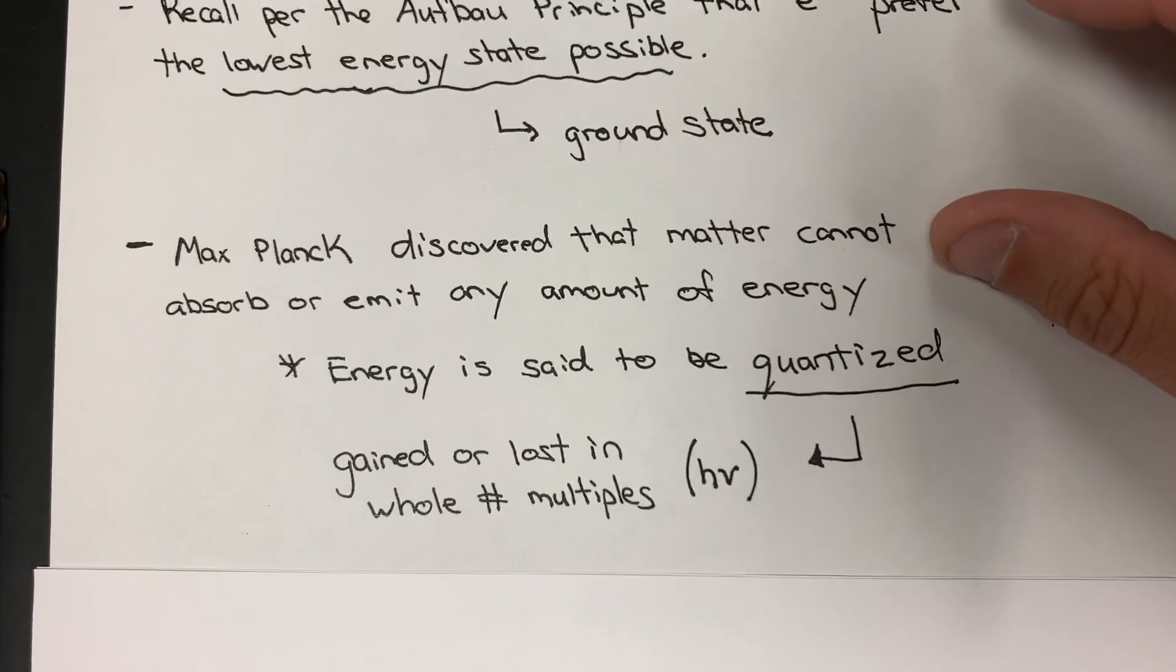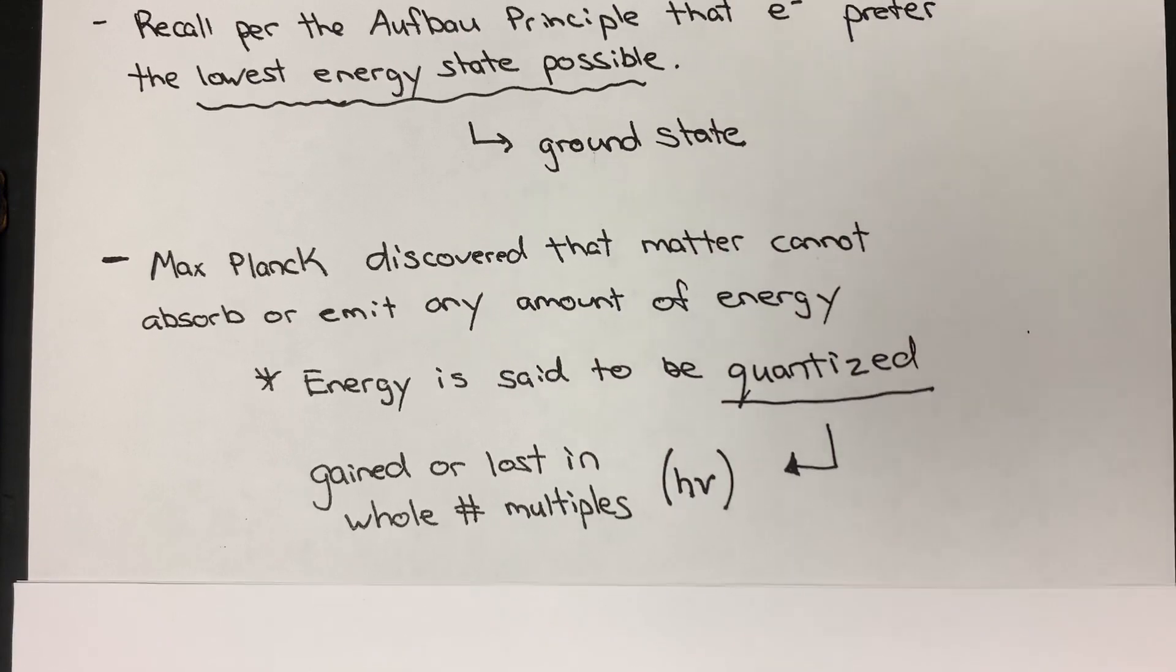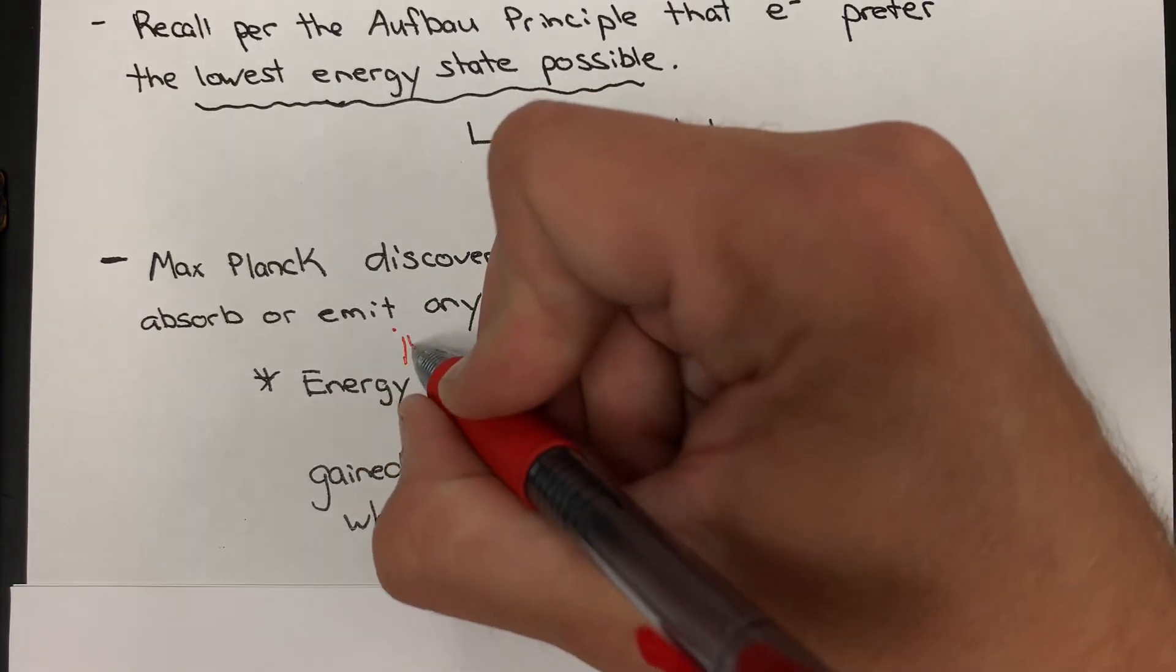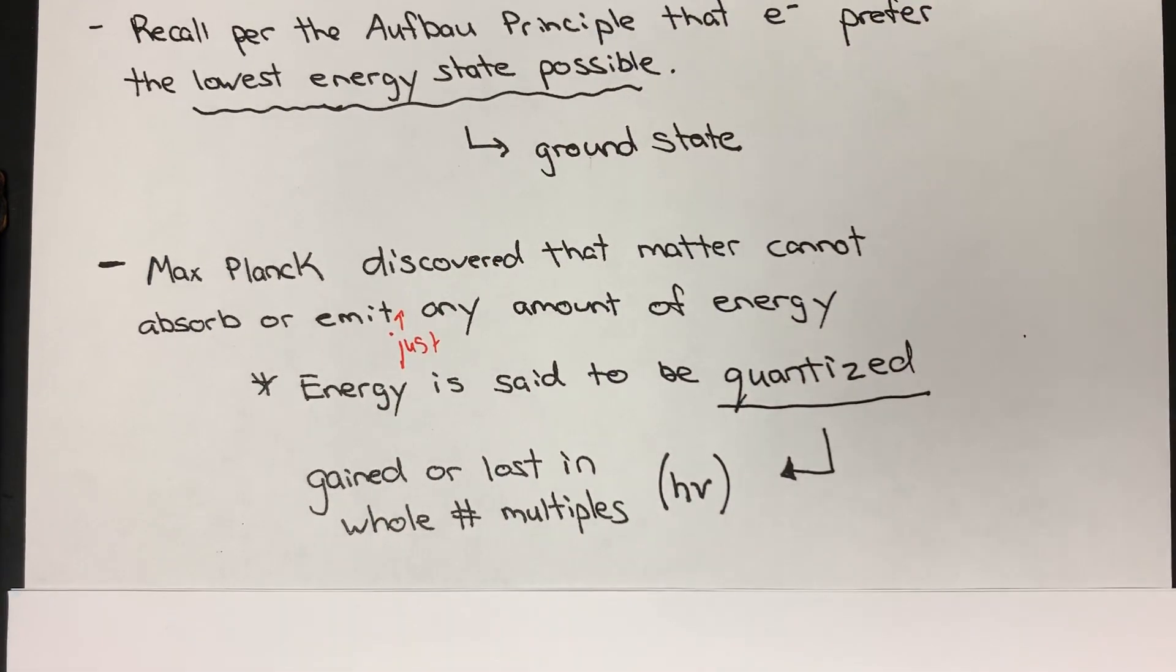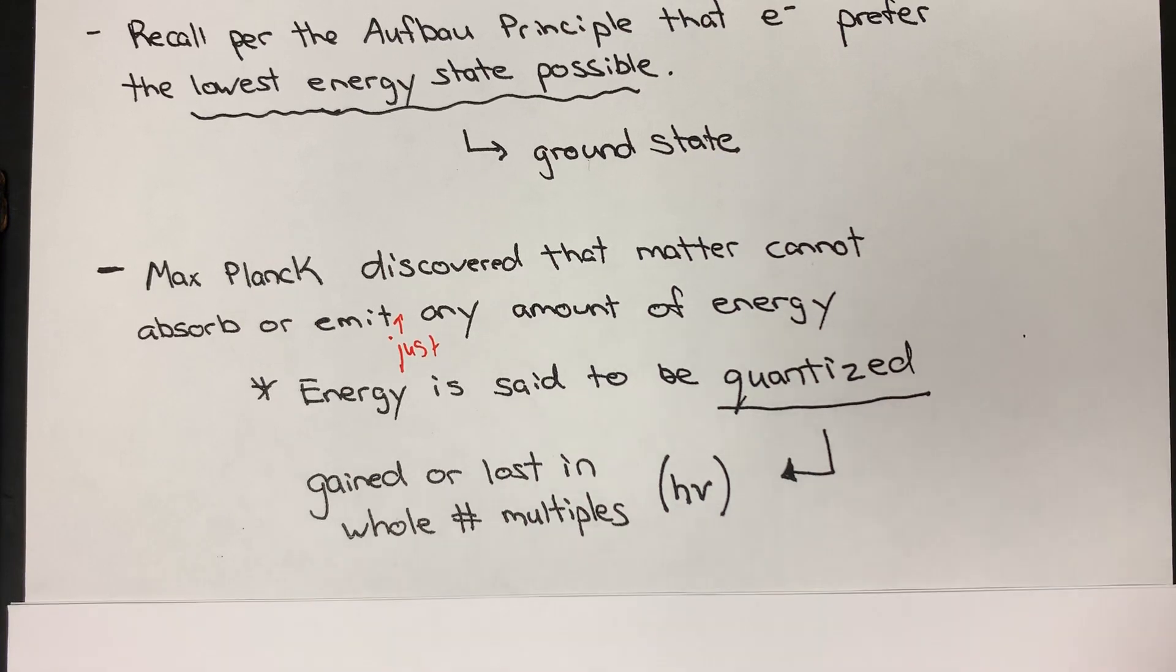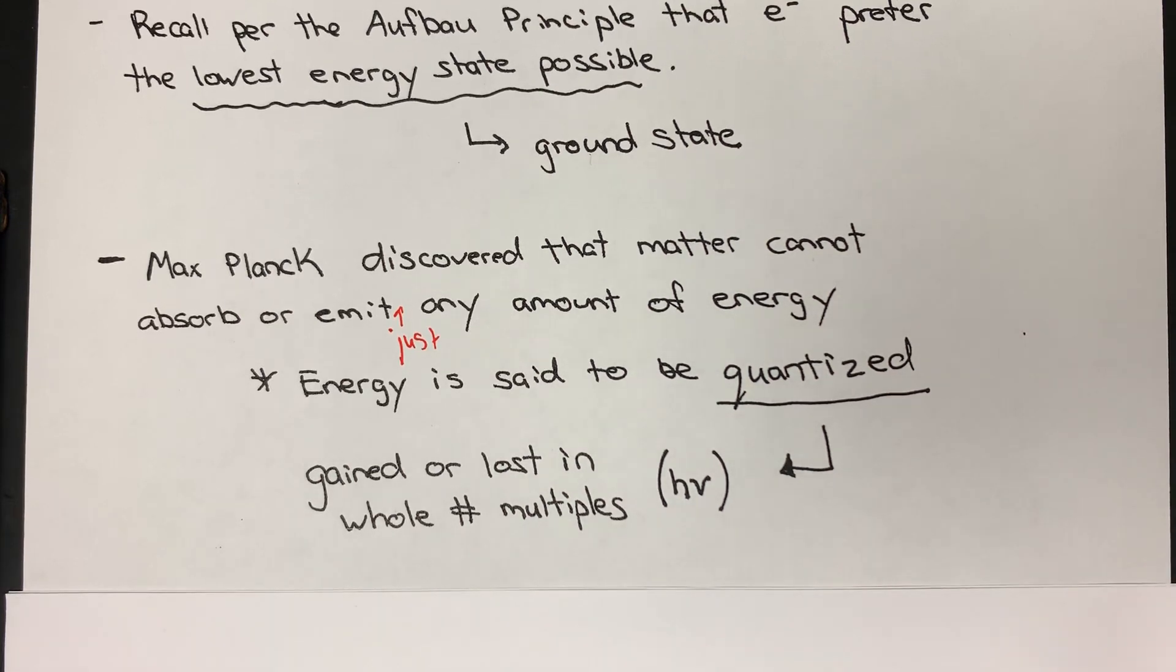There's Max Planck who popularized and discovered that matter cannot absorb or emit just any amount of energy. Energy is said to be quantized. This is to say that it is gained or perhaps lost in whole number multiples. We can actually calculate this energy using Planck's constant multiplied by ν, which is just the frequency. We'll come back to this equation in a moment.